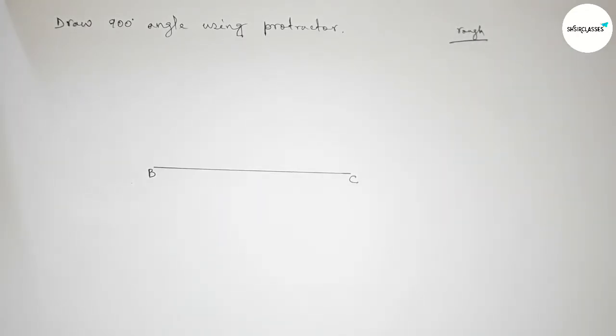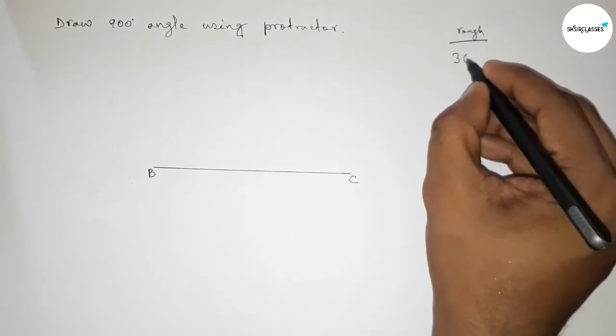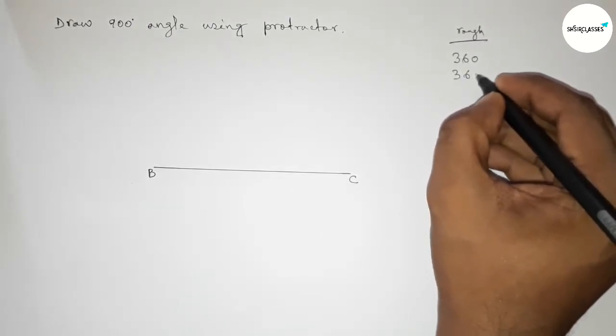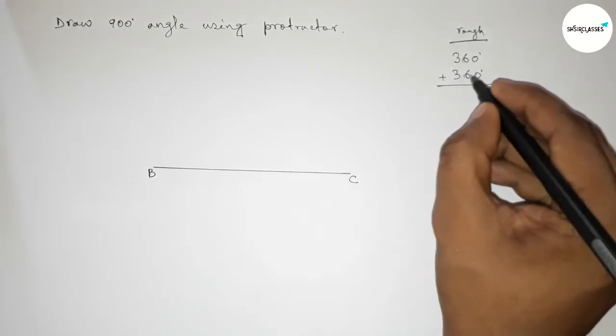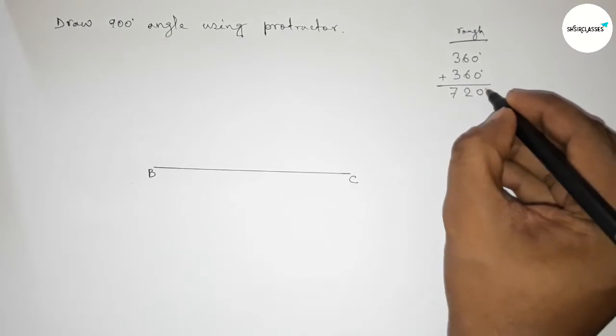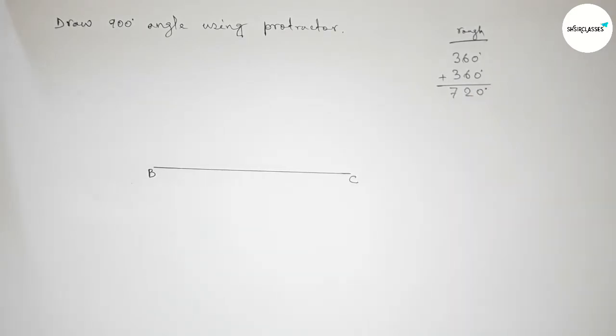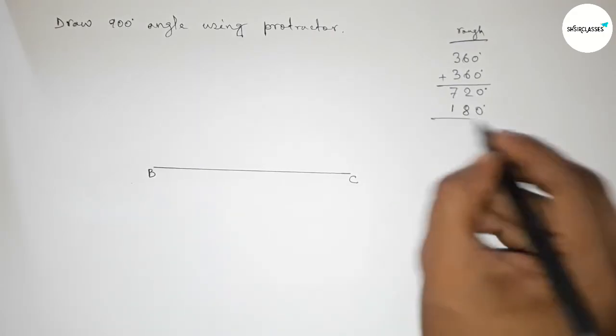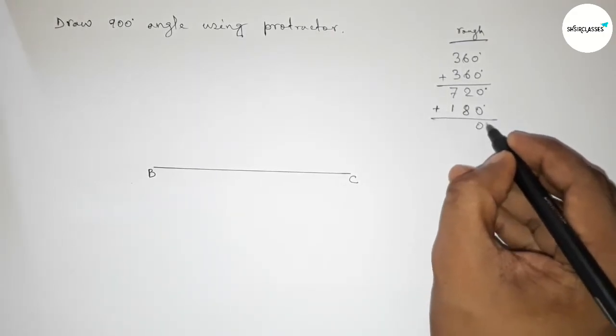360 degrees plus 360 degrees, then we can get 720. Now again, adding 180 degree angle with 720, then we can get 900 degree angle.